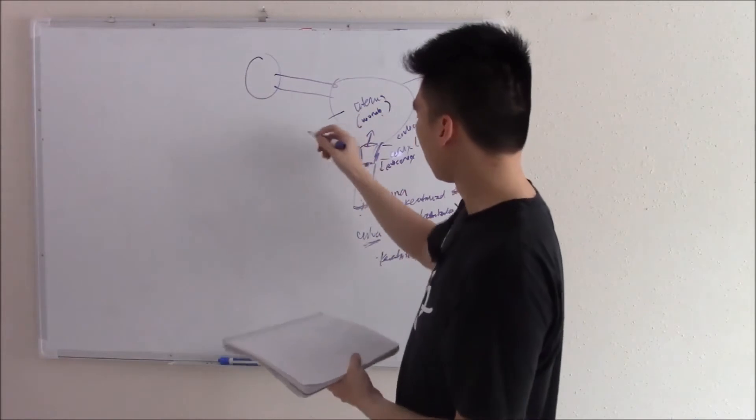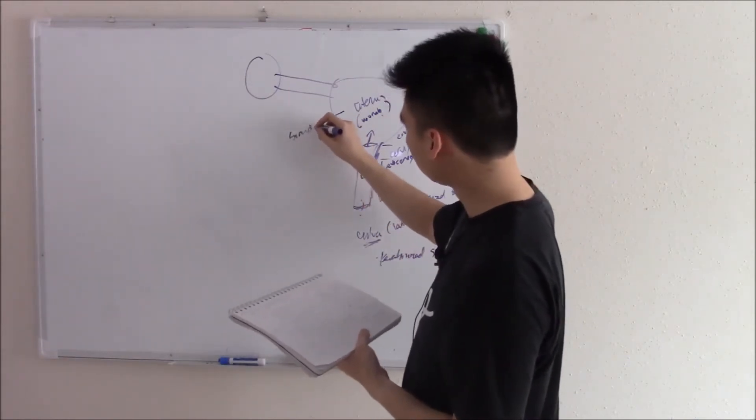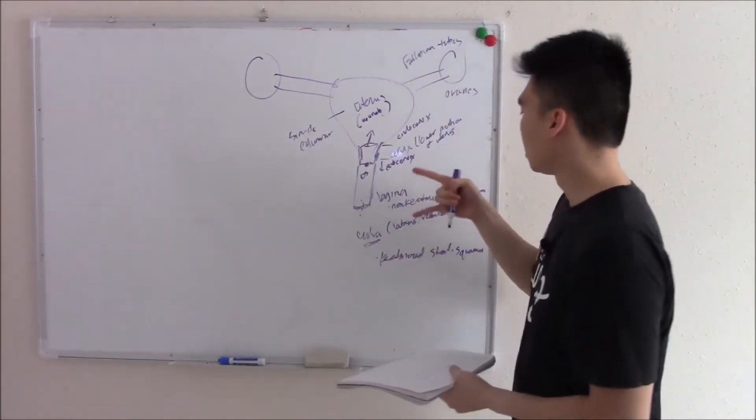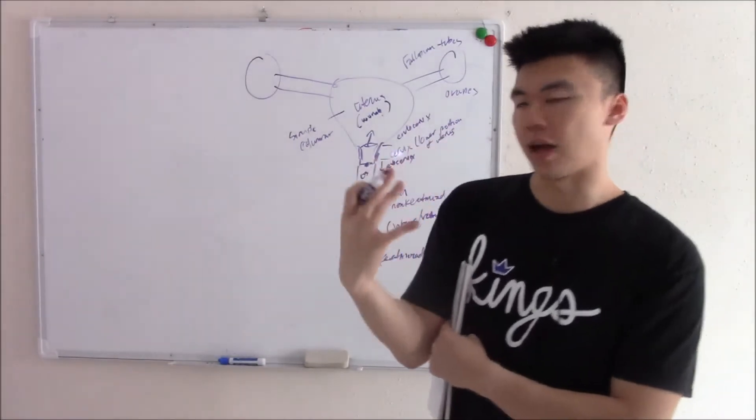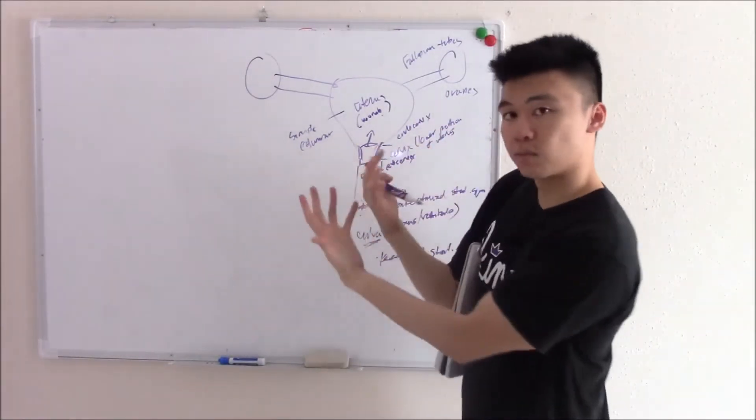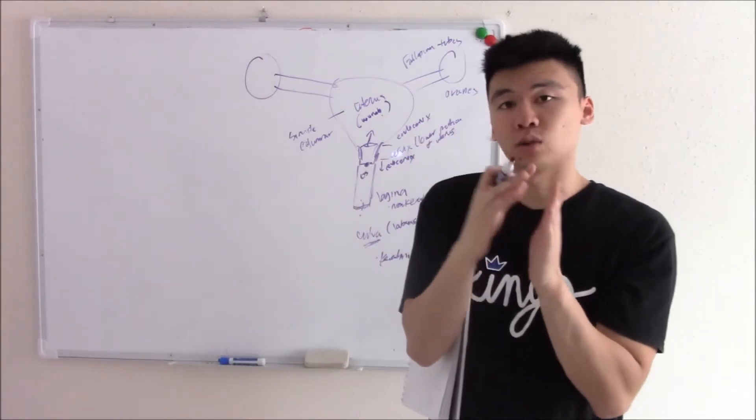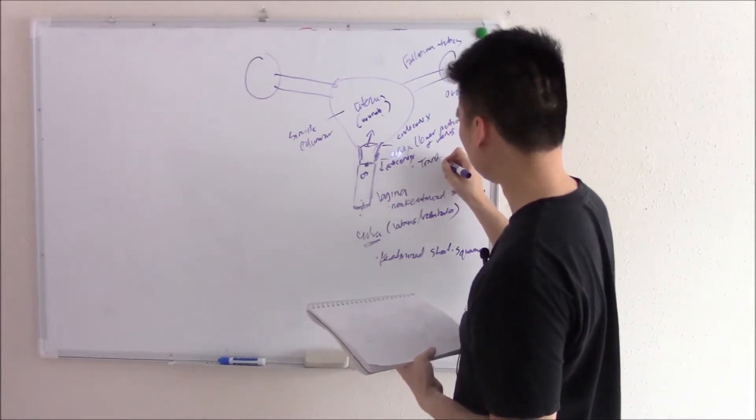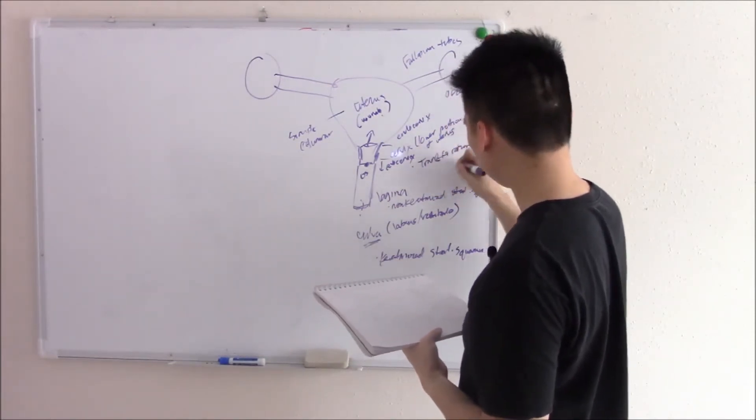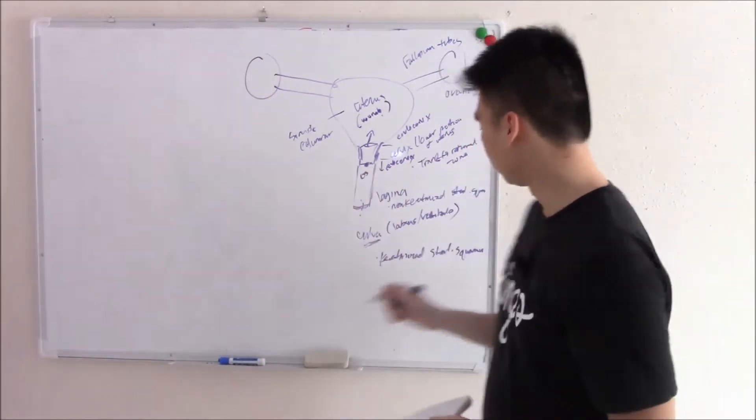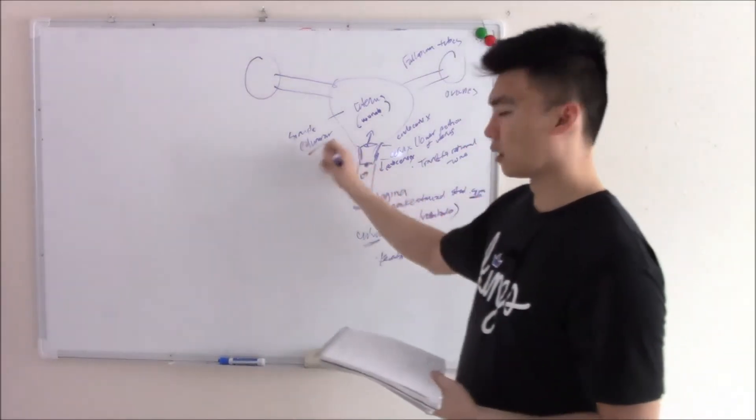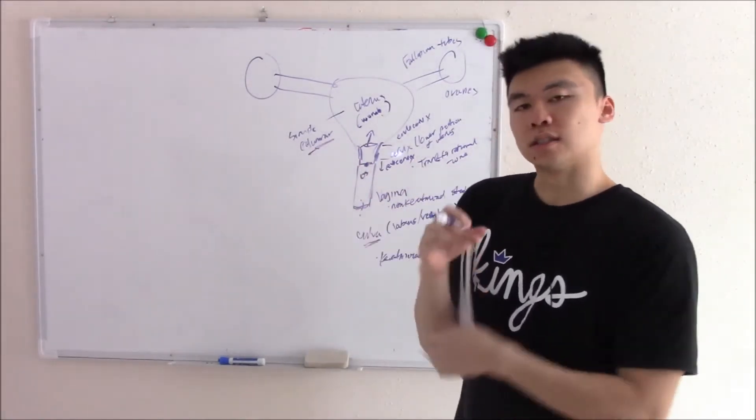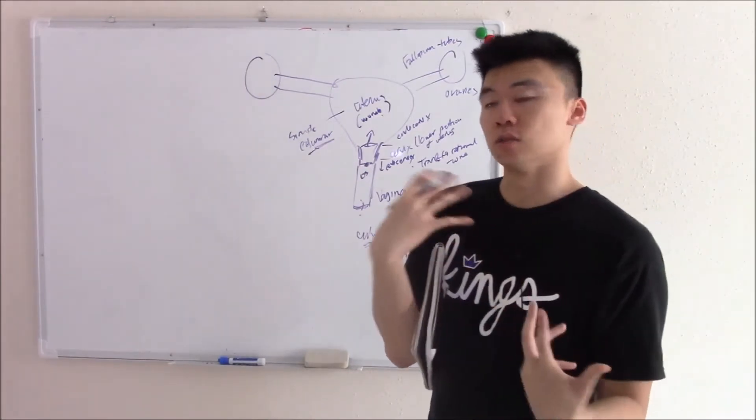Now your uterus is simple columnar. Here's the thing, you don't just go from stratified squamous to simple columnar like that. Your cervix, the middle part, the connecting part, actually you can see the change from stratified squamous to columnar. We call that the transformational zone, sometimes known as the squamous columnar junction. You can see that junction very sharply. The pictures will be in the notes.